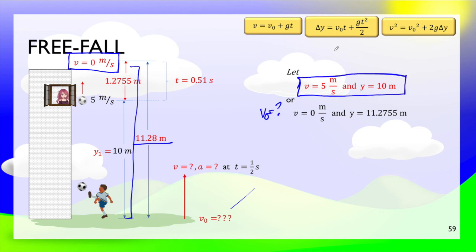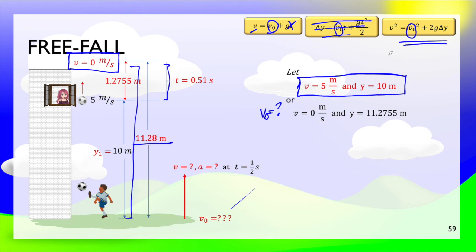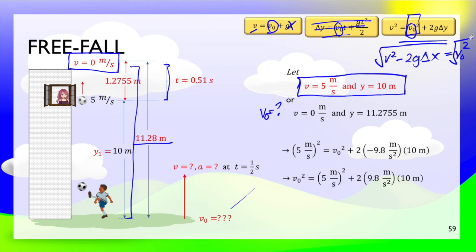I'll use the first approach because it's easier. We're looking for V0. We don't have time for this, so we use the equation without time. Solving: V0 squared equals v squared minus 2g times y. Take the square root of the result. Substituting the values, V0 equals the square root of 5 squared plus 2 times 9.8 times 10, giving 14.866 meters per second. That is the initial velocity of the ball.